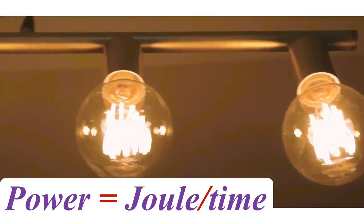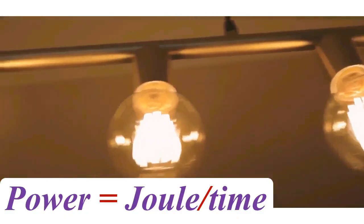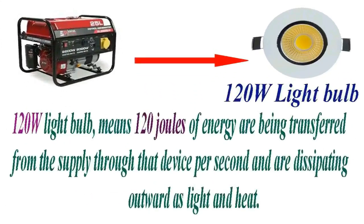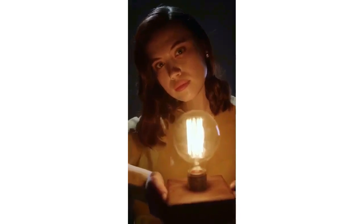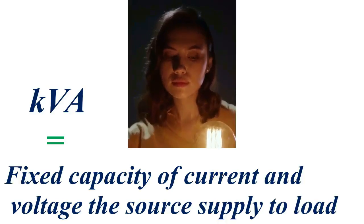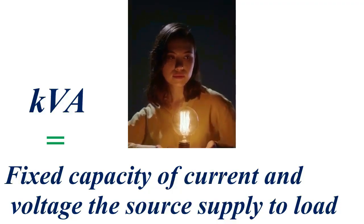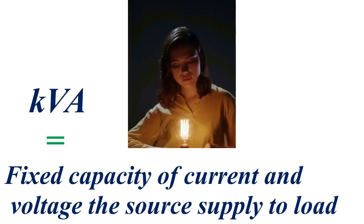There is a transfer of energy per second — a transfer of a certain amount of joules per second. So if we say 20 watts, what we are actually saying is 20 joules of energy transferred every second. A 120-watt light bulb means 120 joules of energy are transferred from the supply through that device and are dissipating outward as light and heat. When we talk about kilovolt-amps — KVA — we are talking about how much fixed capacity this system has to supply current flow, supply a certain voltage, and be able to transfer energy to the load.